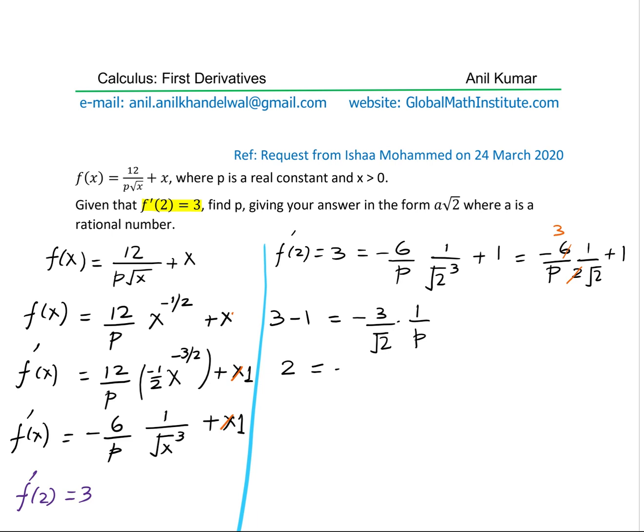So 2 equals minus 3 over square root 2 p. We cross multiply to get the value of p, which is minus 3 over 2 square root 2. We should rationalize this to get our answer in the required form. We can write this as p equals minus 3 over 2 square root 2. We will rationalize, multiplying and dividing by square root 2. That gives you minus 3 square root 2 over 2 times 2, which is 4. So we have minus 3 over 4 square root 2.